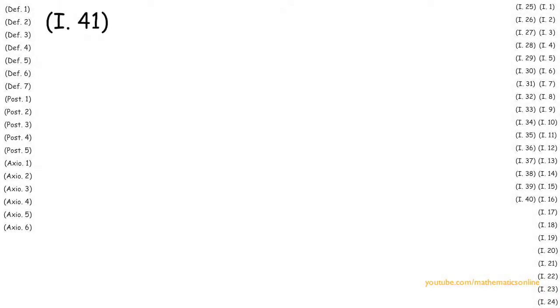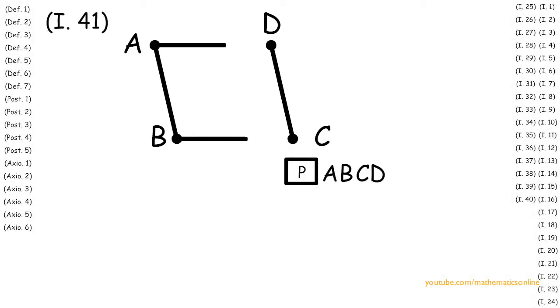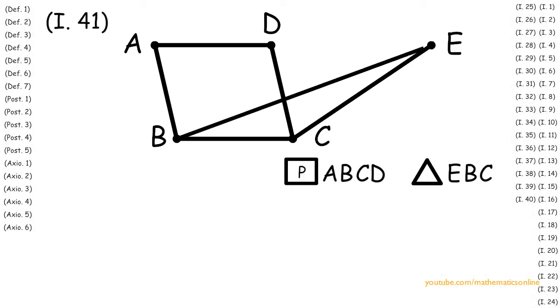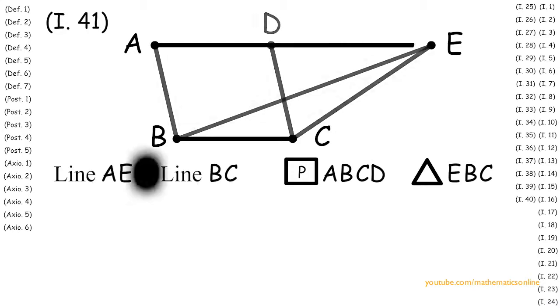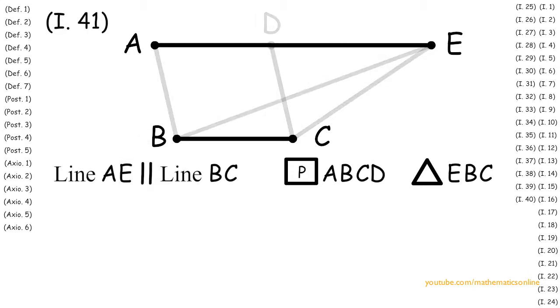To begin, we are given parallelogram ABCD and triangle EBC. We are also given that line AE is parallel to line BC.